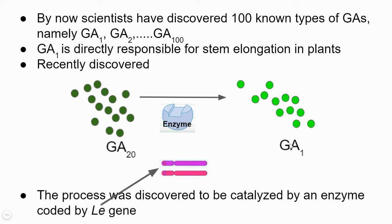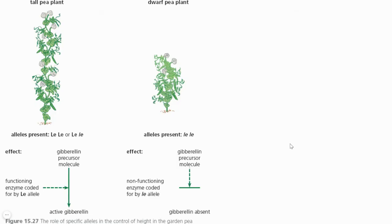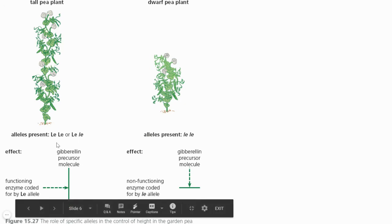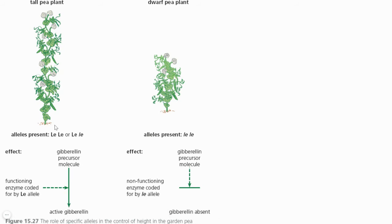The capital LE gene has allelic forms — some plants will have capital LE / capital LE, and some may have small le / small le. You should apply your concept of homozygous and heterozygous alleles here. On screen you can see a tall pea plant and a dwarf pea plant. Naturally tall pea plants have either both alleles as capital LE / capital LE, or in heterozygous form; naturally dwarf pea plants have both small le / small le alleles in the homozygous recessive state.